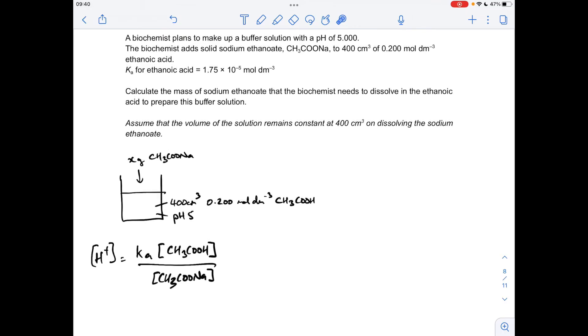So what we need to do in this question is calculate the salt concentration, and then from the volume we can work out how many moles of salt needed, and then we can turn that into grams. So the Ka over salt expression rearranges to that: Ka times the acid concentration over the H plus concentration, and now we just need to put the numbers in.